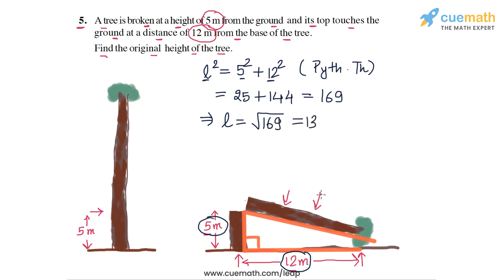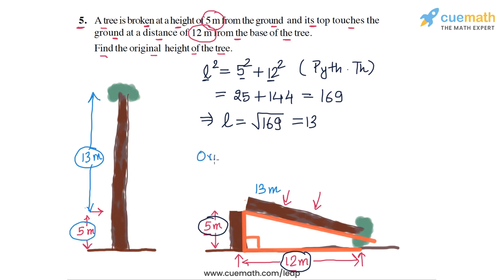The part that has fallen off has a length of 13 meters. So in the original figure, when the tree was standing, the part above the breakage point would be 13 meters tall. The original height of the tree will be 13 meters plus 5 meters, or 18 meters — the part still standing (5 meters) plus the part that fell off (13 meters) equals 18 meters. The answer is: the original height of the tree is 18 meters.